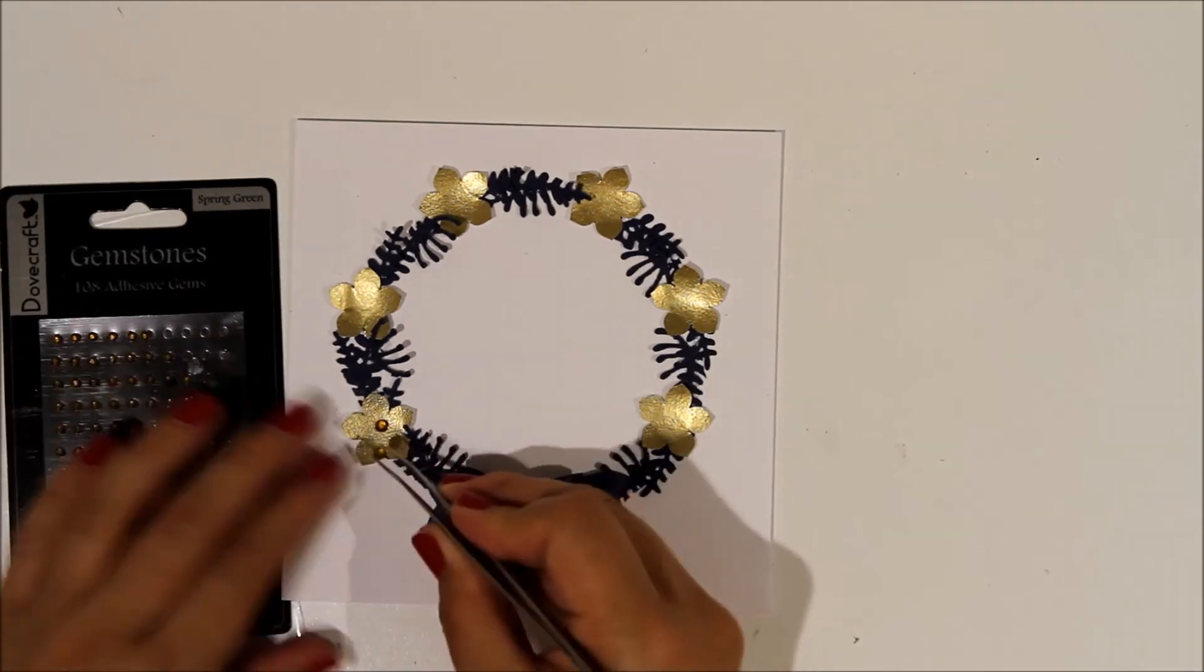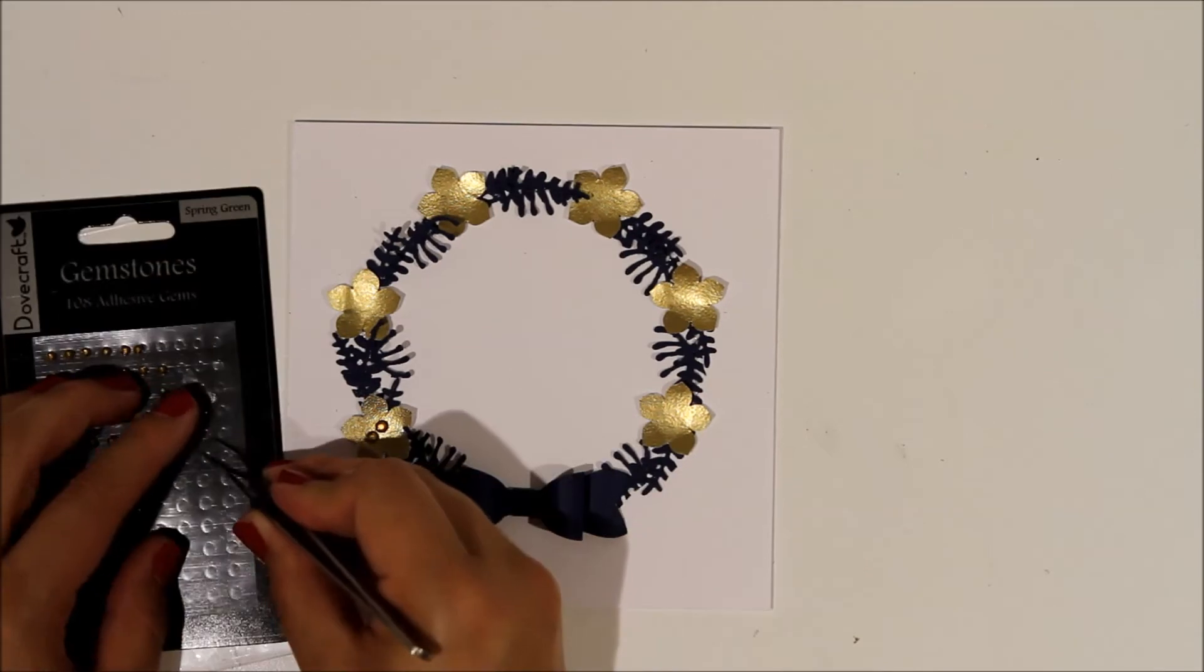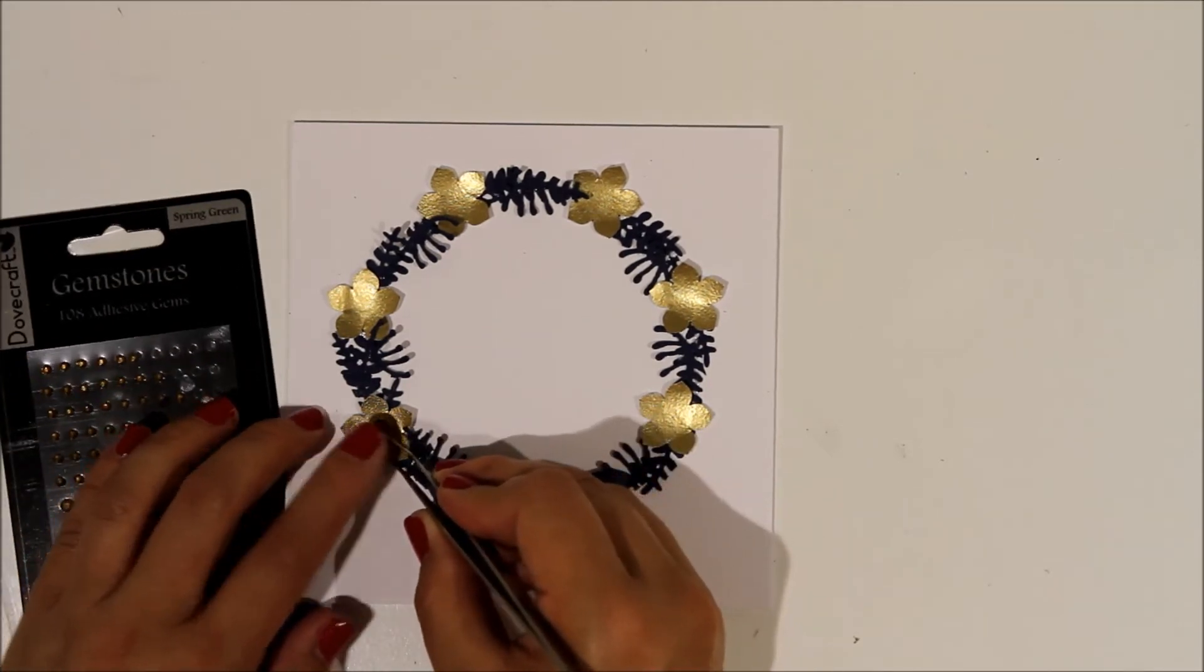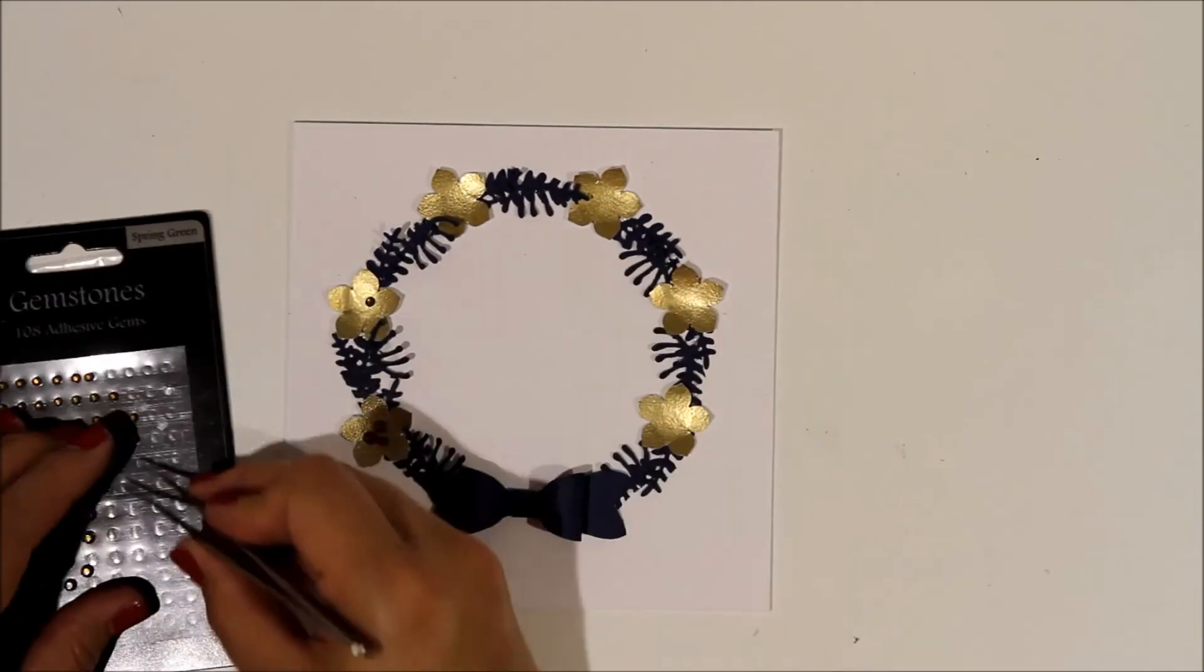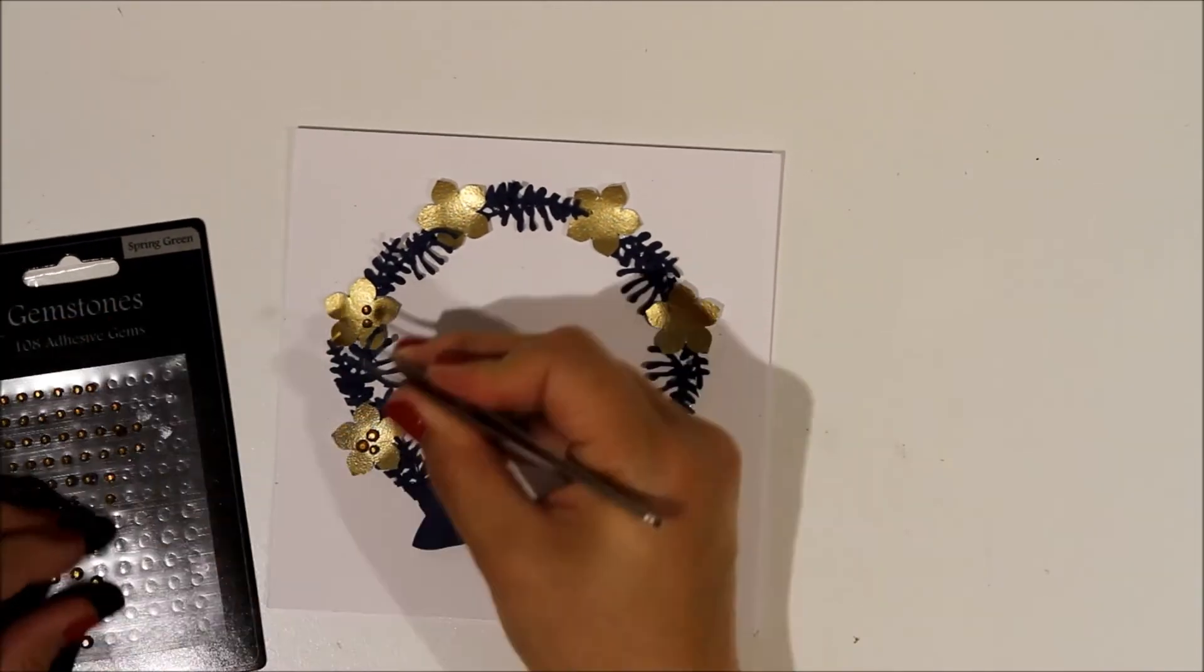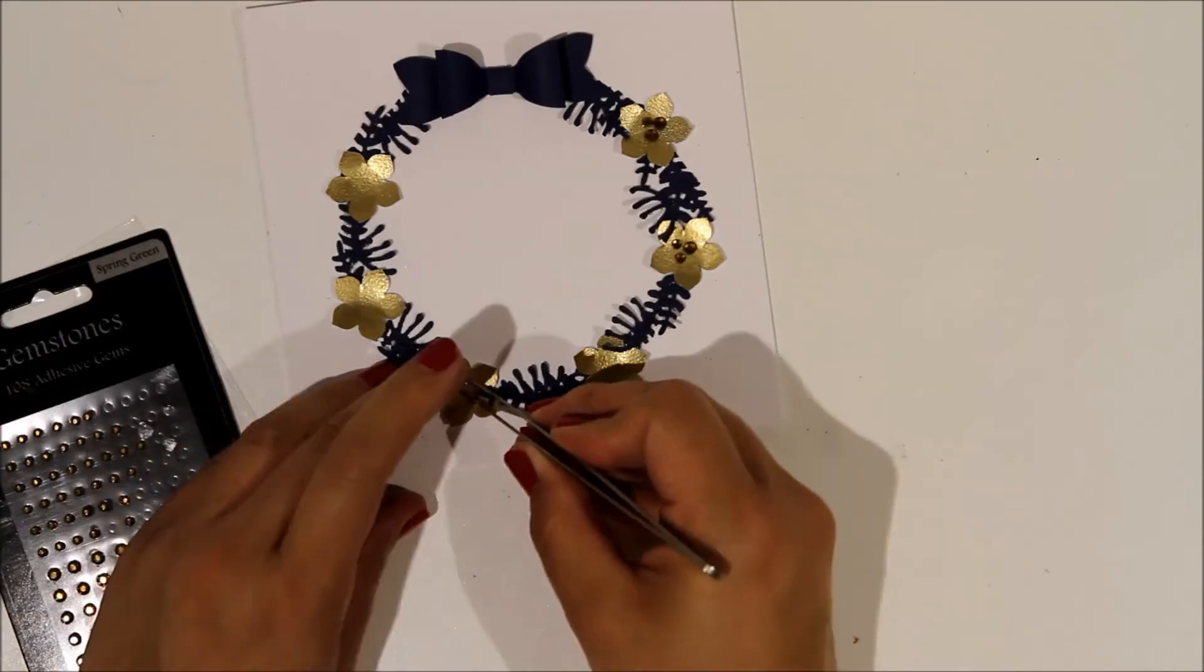Now I'm coming in with some gems, the same gems as I used on card one, and just popping little clusters of three gems into each of the flowers. I'm alternating between large and small gems as I go around the flowers.